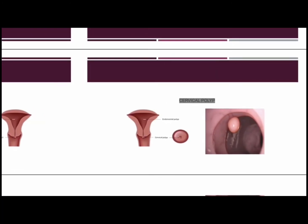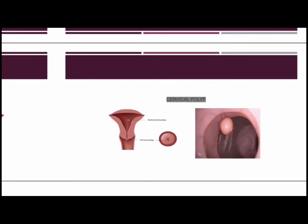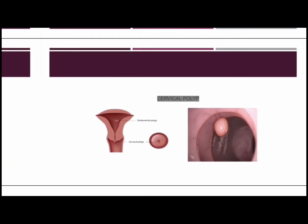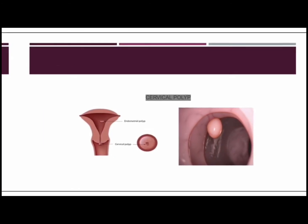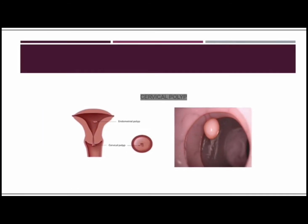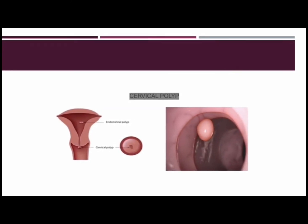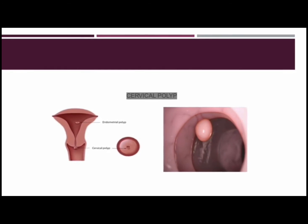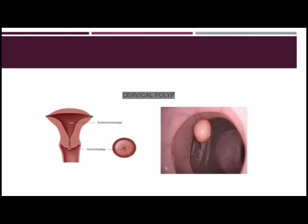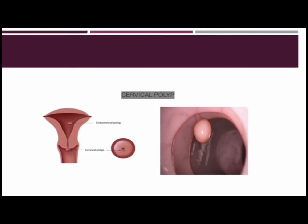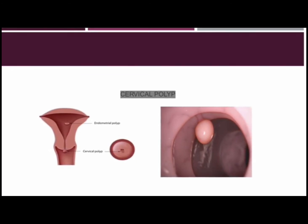Cervical polyps are usually small, teardrop-shaped projections that grow from the surface of the cervix or, more commonly, in the endocervical canal. The endocervical canal is the inside of the cervix that leads to the uterus, and it is lined with glandular cells typical of mucous membranes. If you are diagnosed with a cervical polyp because you are having pain, it is most likely a large endometrial polyp or even a prolapsed pedunculated fibroid. In approximately 27% of women with cervical polyps, there are also associated endometrial polyps.